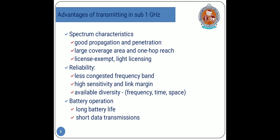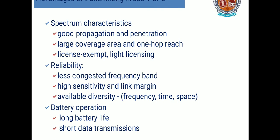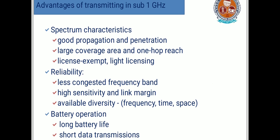The advantages of transmitting in the sub-GHz band include good propagation and penetration, large coverage area with one-hop reach, and the ability to use relay nodes. Licensing is light, supporting the spectrum. Reliability is increased through less congested frequency bands, high sensitivity, and link margin. It supports various frequency, time, and space diversities, and provides long battery life with short data transmissions that also save battery power.